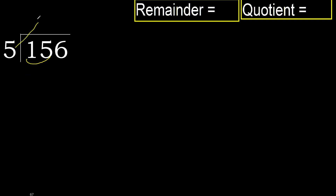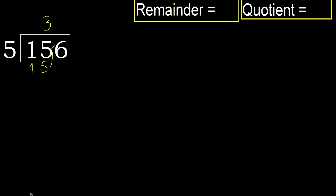5 — multiply by which number is nearest but not greater. 5 multiply by 2 is 10, 5 multiply by 4 is 20 — 20 is greater. Multiply by 3 is 15 — 15 is not greater.